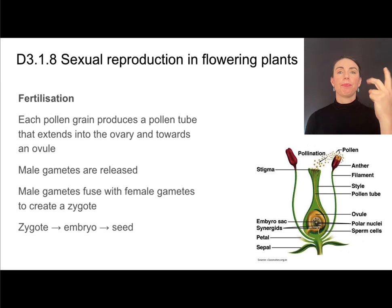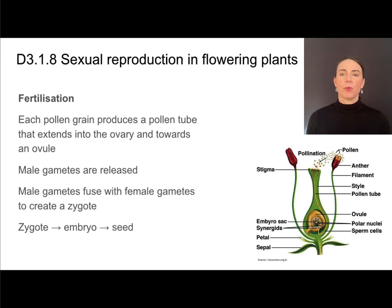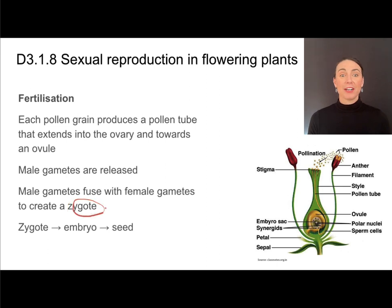We've talked about gamete production and pollination; the last bit is fertilization. It's important to note that pollination and fertilization are not the same thing — they are separate events. Pollination is the transfer of pollen. Once it lands on the stigma, the fertilization process can ensue. Each pollen grain contains two male gametes and a helper cell, and this pollen grain is going to build its own pollen tube that extends down into the ovary towards the ovule where the female gametes are. The pollen grain releases those male gametes, they travel through the pollen tube and fuse with the female gametes to create a zygote, which undergoes mitosis to create an embryo that develops into a seed.